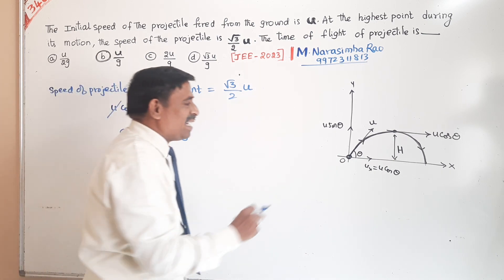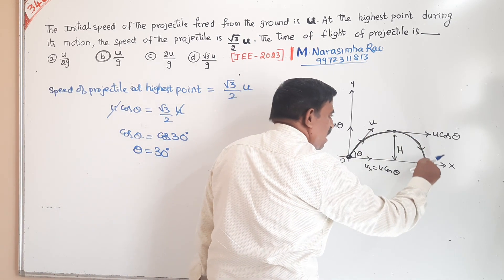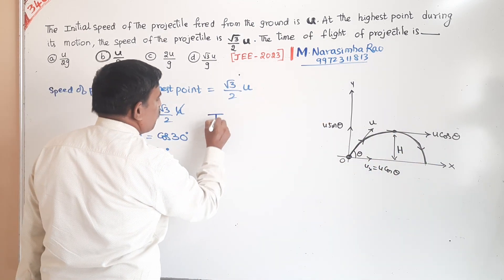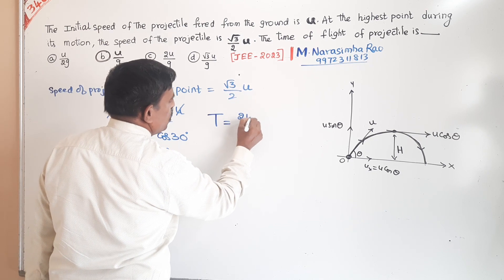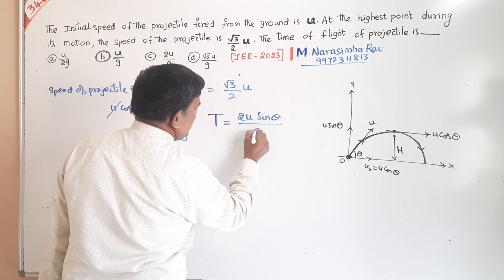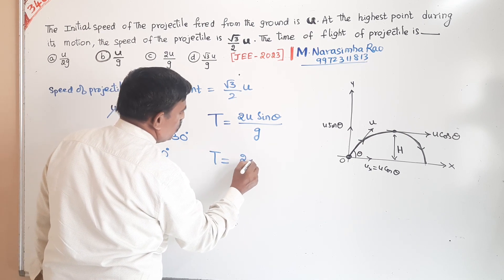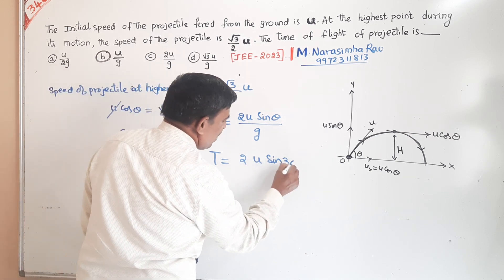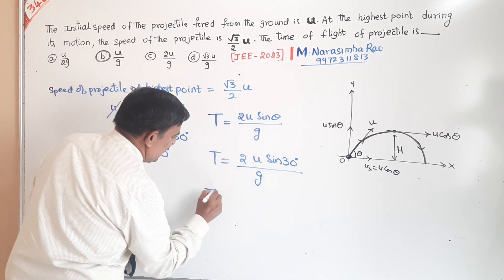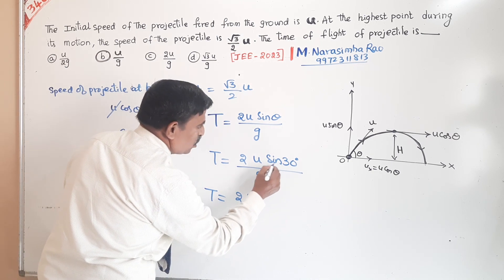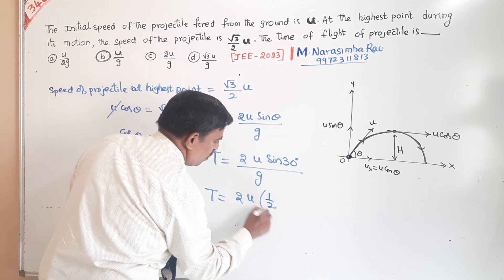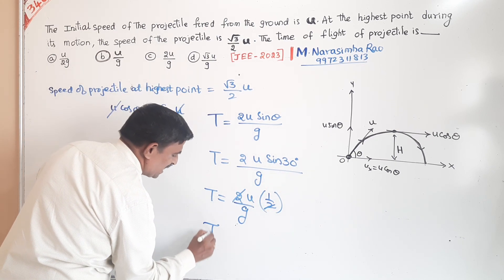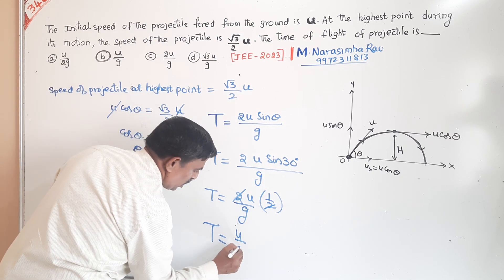They are asking for the time of flight — the total time the projectile is in the air. The formula is T equals 2U sin theta by G. Substituting theta equals 30 degrees, sin 30 equals 1 by 2. So T equals 2U times 1 by 2 by G. The 2's cancel, giving time of flight T equals U by G.